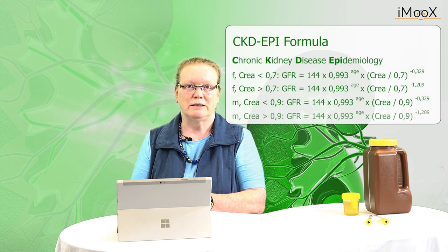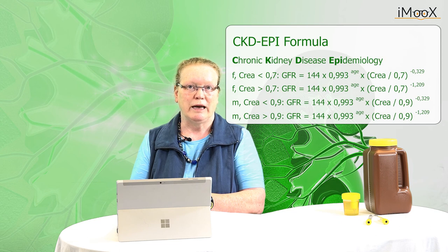The CKD-EPI formula subdivides the normal range of creatinine into an additional low normal range: for female, creatinine below 0.7, and for male, creatinine below 0.9. Therefore, the results for eGFR based on the CKD-EPI formula in healthy subjects with normal kidney function are closer to the real measured GFR.